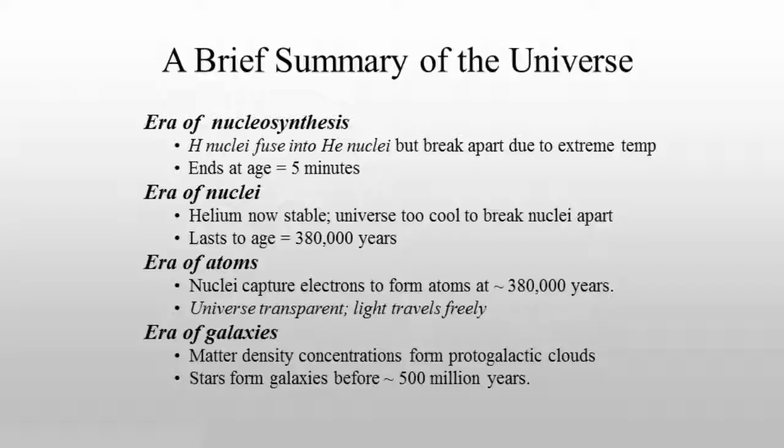As the universe continues to expand, we now have stable hydrogen and stable helium. Gravity can begin to work, causing enormous regions to condense into what we know today as galaxies, in which stars form. The galaxies would have formed before at least 500 million years of age. So this is a very brief overview of the history of the universe, giving us at least some idea of what was happening in these early times.